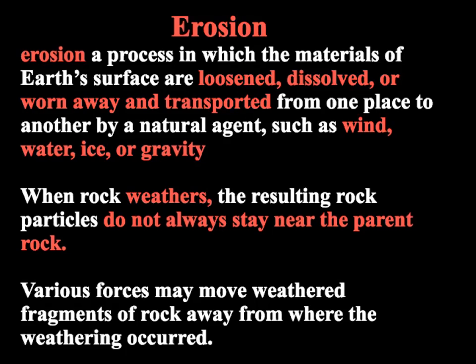We've already talked about how rocks break down in the last lecture on weathering. This is what happens as those little pieces of sediment get moved around, as they get moved from one place to another, as those loosened, dissolved, or worn away pieces of rocks get transported — we call that erosion.